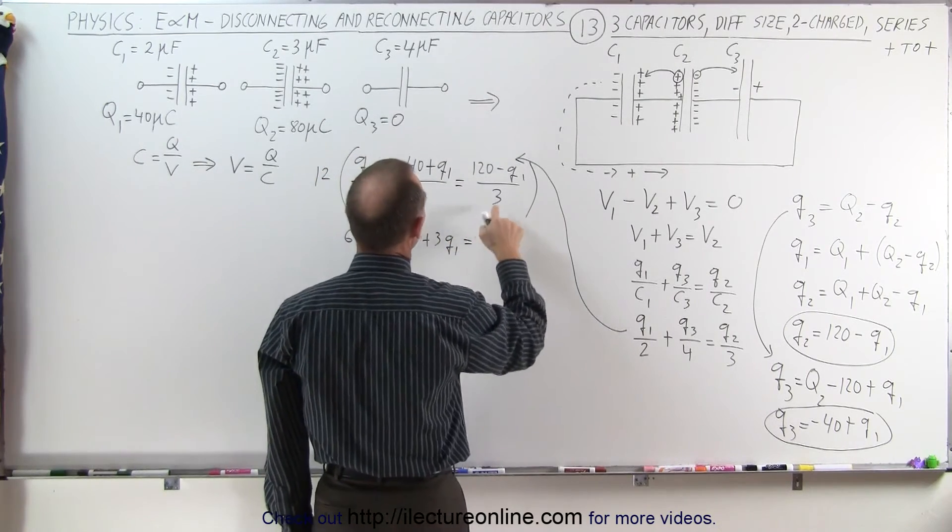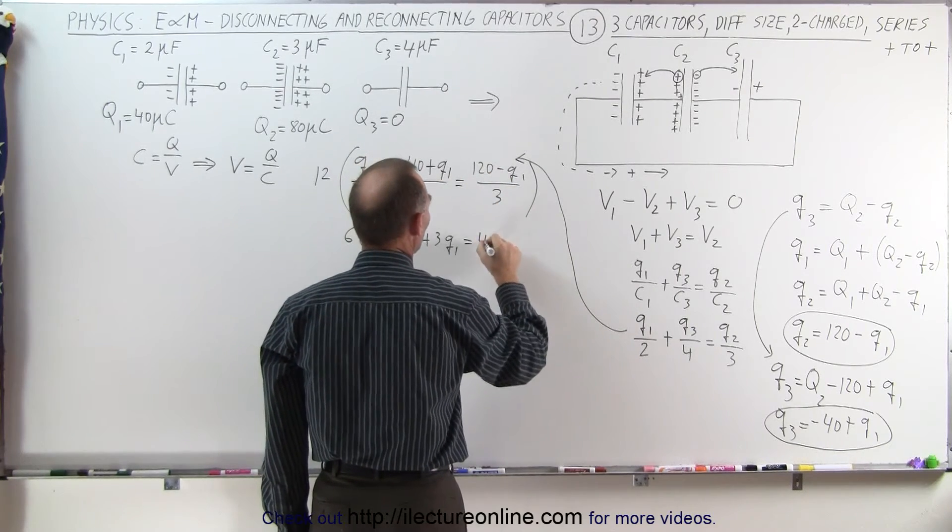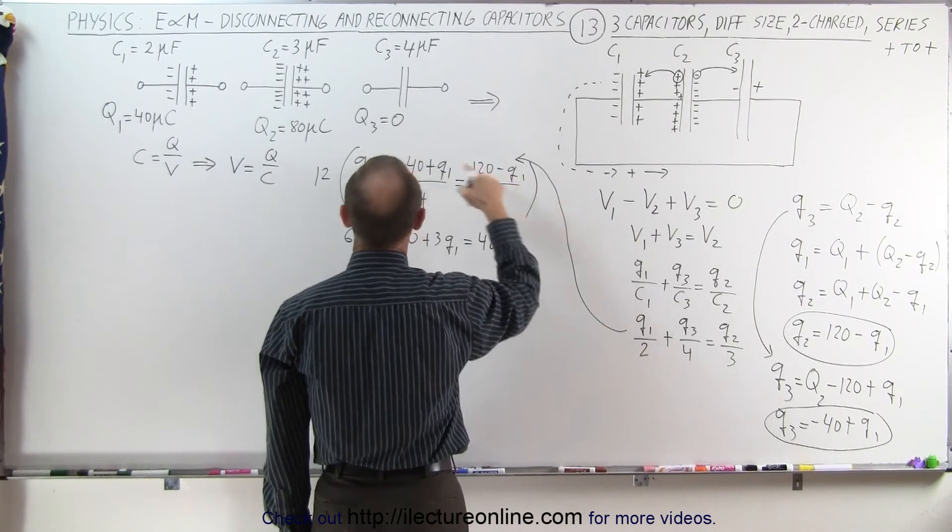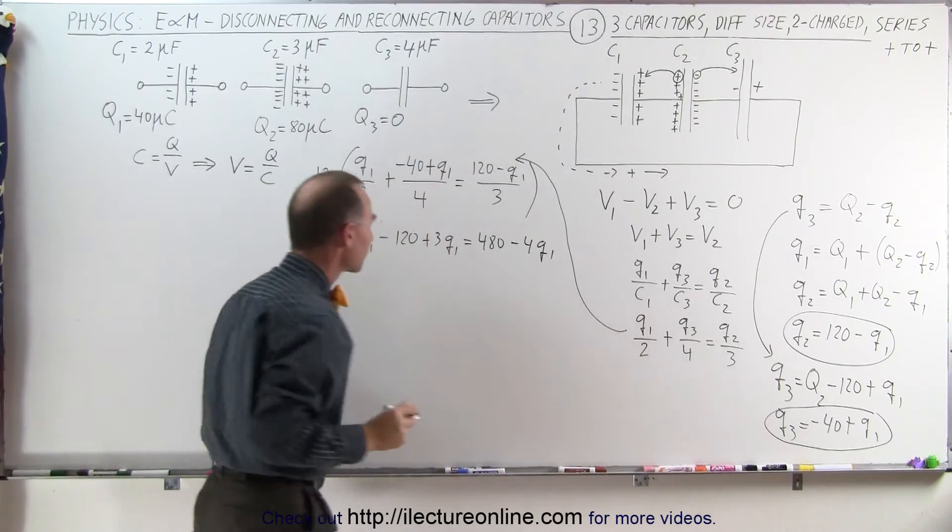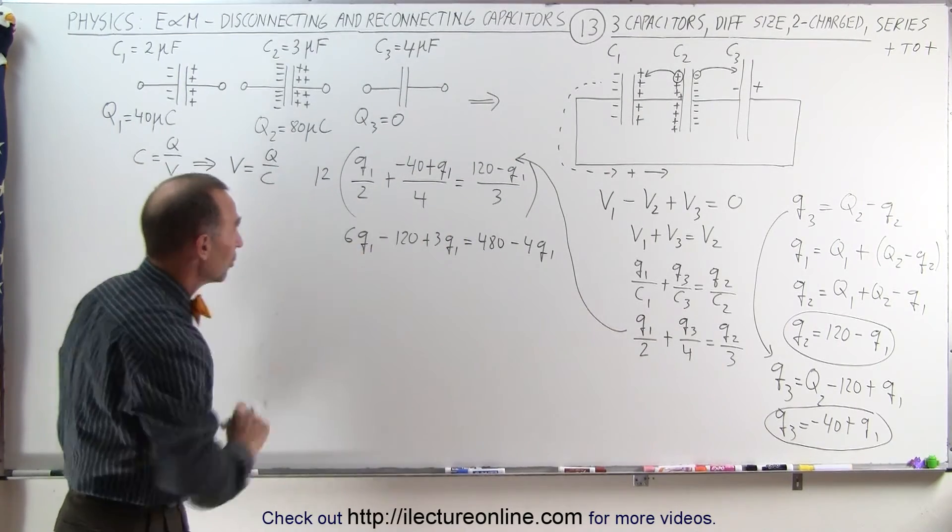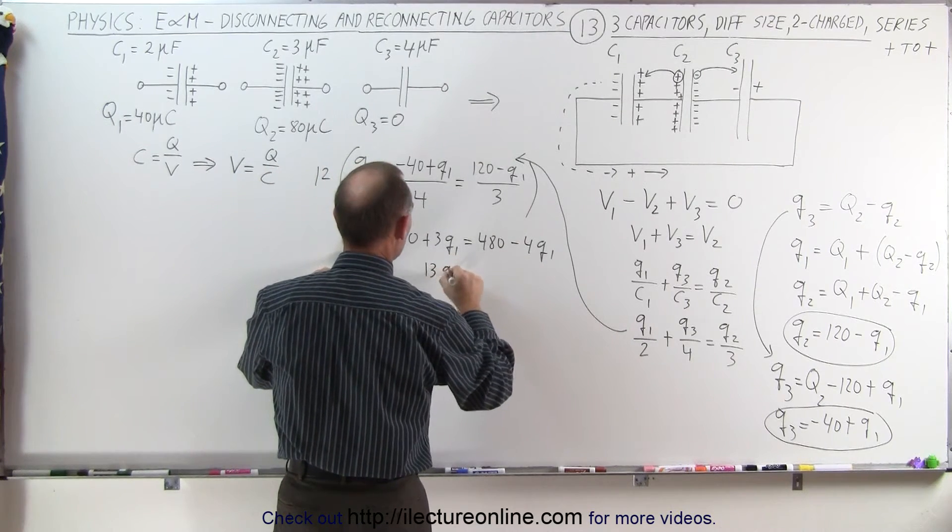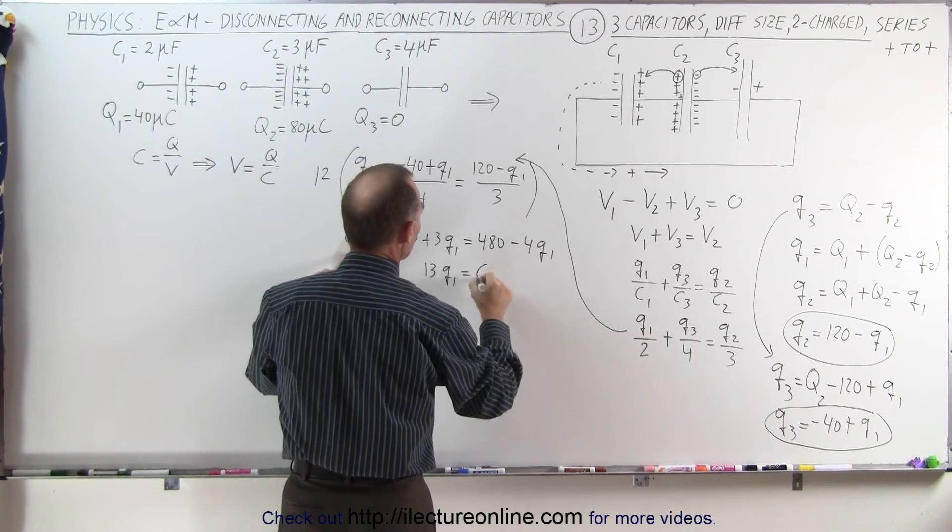And 3 times this gives us plus 3Q1 plus 3Q1. And that is equal to 12 divided by 3 is 4. 4 times 120 is 480. And here we have minus Q1 times 4, that would be minus 4Q1. Now I'm ready to move all the Q1s to one side, all the numbers to the other side. 6 plus 4 plus 3 is 13Q1 is equal to 480 plus 120, which would be 600.